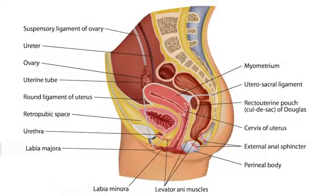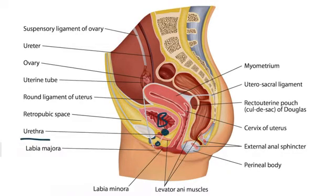Here is a sagittal view of the female pelvis. We can see the bladder — I'll write a B for short — and here we have labeled the urethra. The internal sphincter would be up here, and the external would be down here. Picture the internal as being a continuation of the detrusor muscle of the bladder.